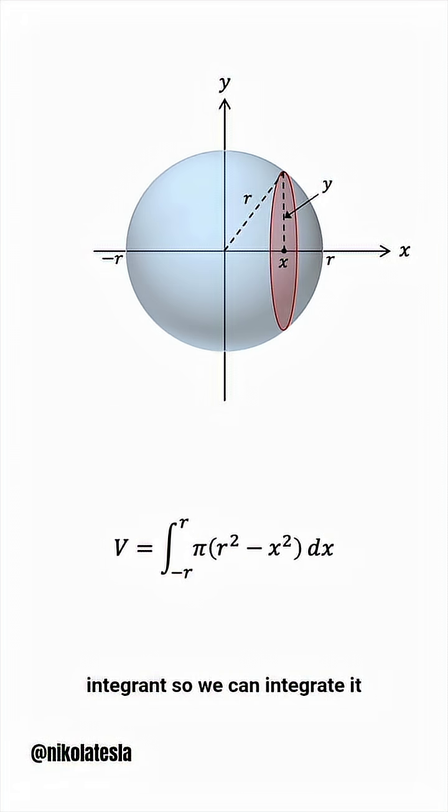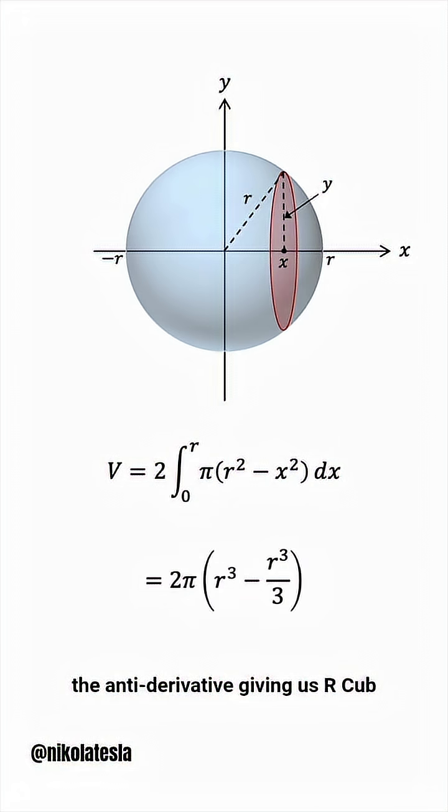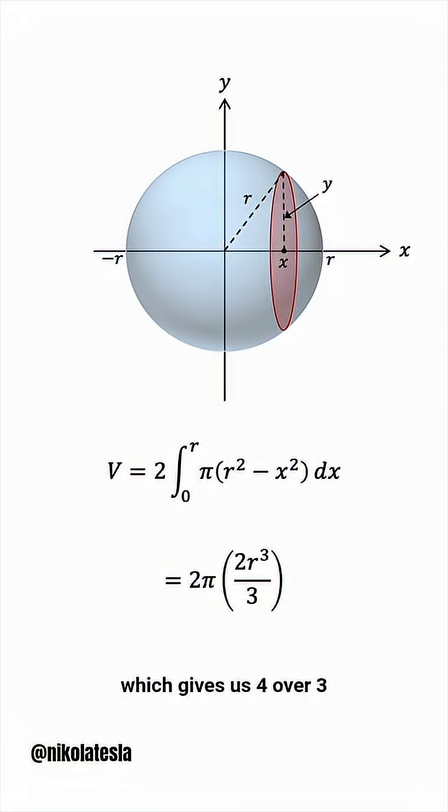This is an even integrand, so we can integrate it from 0 to r and multiply by 2. The lower bound is 0, so all we have to do is plug in r into the antiderivative, giving us r cubed minus r cubed over 3, which is 2 r cubed over 3, which gives us 4 over 3 pi r cubed.